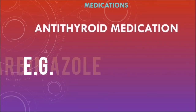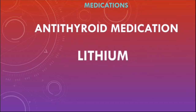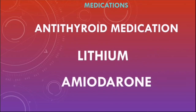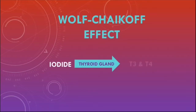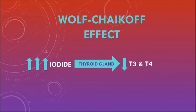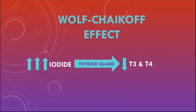Medications can also cause hypothyroidism. Antithyroid medications such as carbimazole or propylthiouracil lower thyroid hormone levels and can cause hypothyroidism. Lithium can cause hypothyroidism by interfering with thyroid hormone synthesis. Amiodarone can cause hypothyroidism via the Wolff-Chaikoff effect — an autoregulatory phenomenon where excess iodide causes the thyroid gland to downregulate T3 and T4 production, acting as a brake to prevent excessive thyroid hormone production.